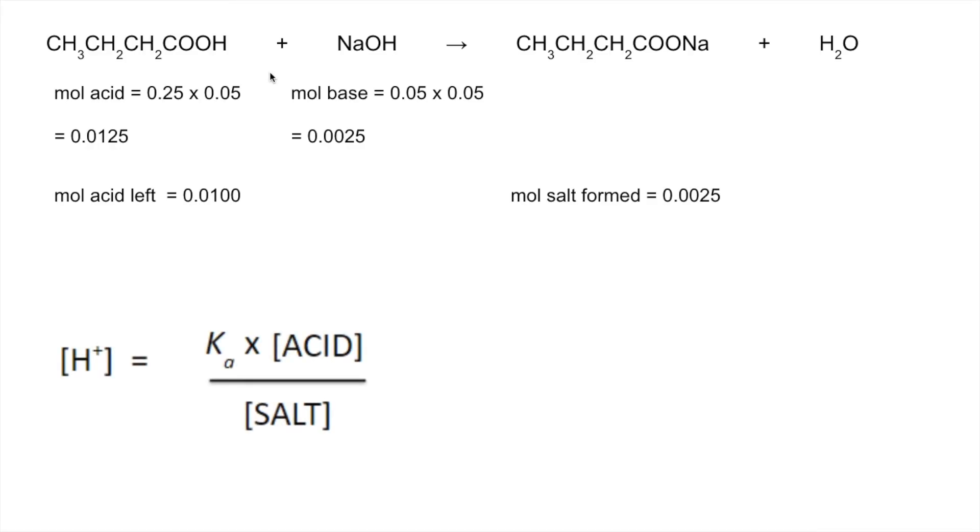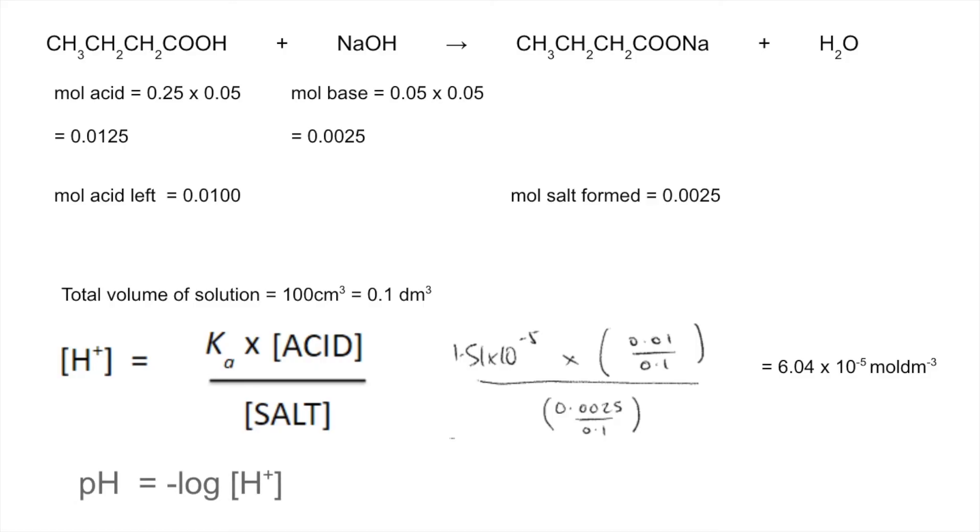We'll bring in the cacid over salt expression now. Remember we don't have the concentrations at this point—we've got the moles of acid and salt. But we can easily turn that into concentration by dividing by the volume, which is 50 cm³ plus 50, so 100 cm³. There's the numbers in the expression, and that gives us an H+ concentration of 6.04 × 10⁻⁵ moles per dm³. Minus log that and we get a pH of 4.22.